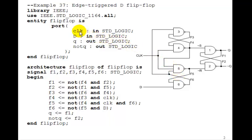The inputs are clock and D, and the output is Q and not Q. We've got the internal signals, F1 to F6: F1, F2, F3, F4, F5, and F6.